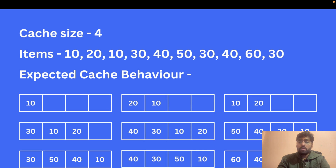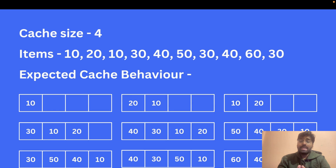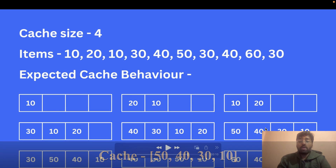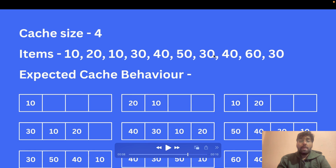Similarly, 40 comes and goes to the front. Now when 50 comes, we check if the array is full or not. Our cache is full at this point, so we are going to remove 20 because it is the least recently accessed. We remove 20 from our cache and insert 50. Our new cache will be 50, 40, 30, and 10.